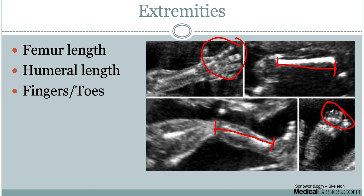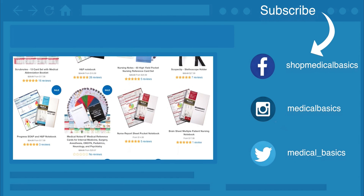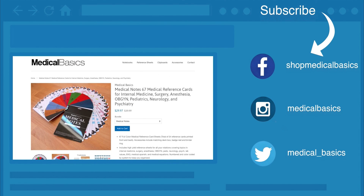The last thing is the amniotic fluid — measuring it in four different quadrants to assess the amount, checking for polyhydramnios or oligohydramnios. Polyhydramnios keys you in to maternal conditions, while oligohydramnios can indicate the baby has kidney maldevelopment and subsequently lung maldevelopment. This has been a broad overview of what we look at when we order anatomy scans — not going into specific numbers, but covering the major categories.